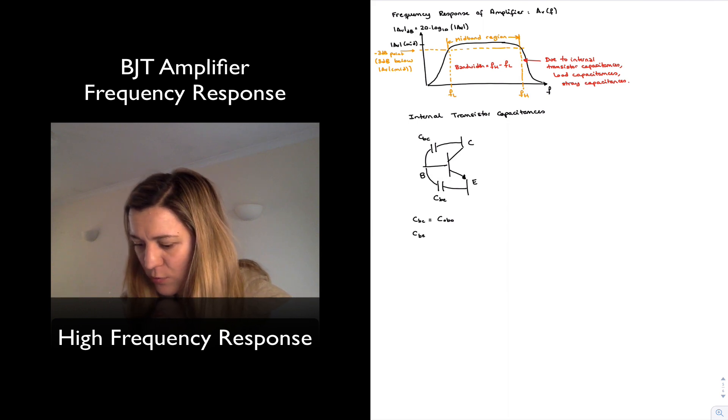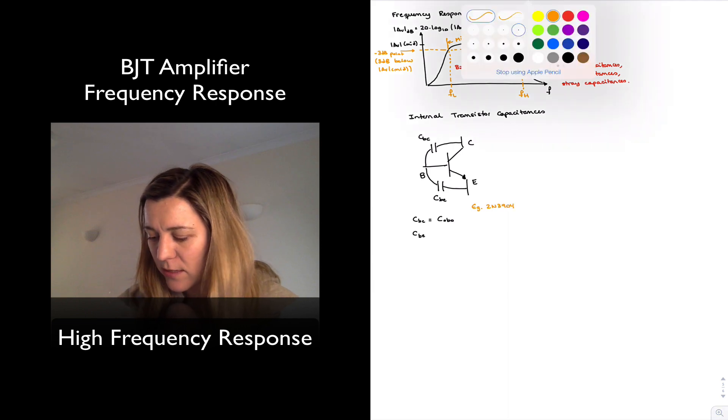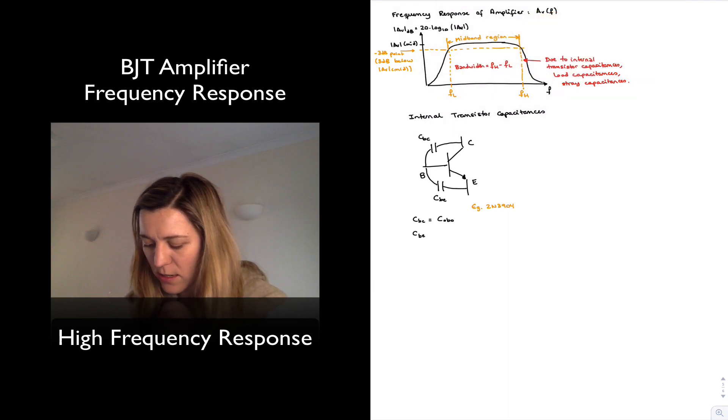I'm going to put that example somewhere. So this is just a general purpose BJT, NPN transistor. So it will be represented as COBO, whereas the base to emitter capacitance is represented as CIBO.